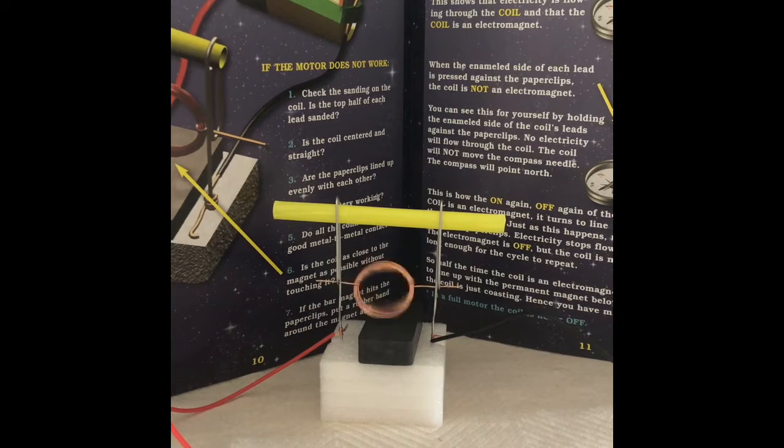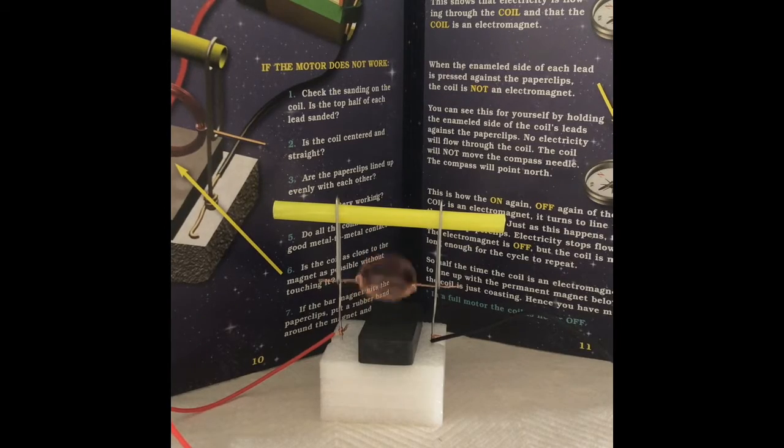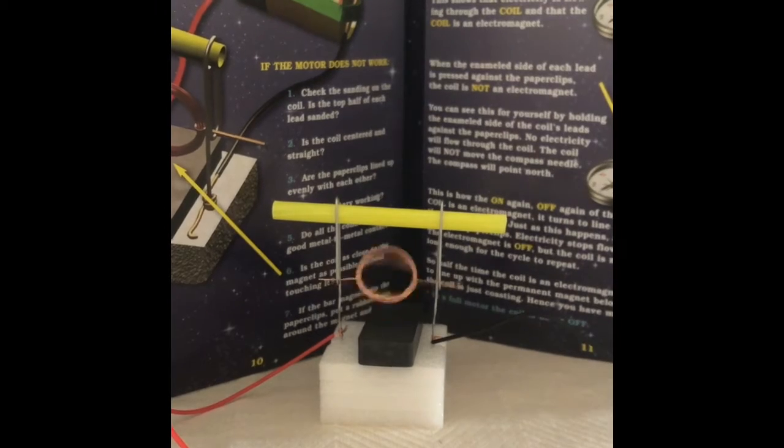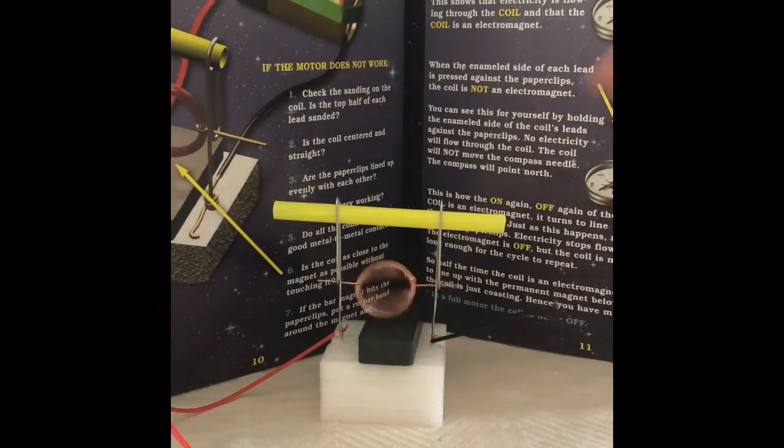The last thing I want to explain is why I called this an electromagnetic spinning half motor. The reason why it is a half motor is because when the paper clips come into contact with the non-sanded side, it is no longer a motor.